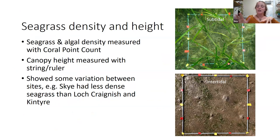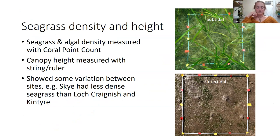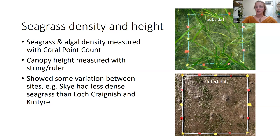Starting with the most basic method: I used quadrats to look at seagrass density. I dropped a quadrat 20 times in the seagrass site and in the control site, taking photos. You can see an example of a photo from the subtidal seagrass and the intertidal seagrass — they look pretty different. I then analyzed these using a piece of software called CoralPointCount, which was developed for corals but works for this too.